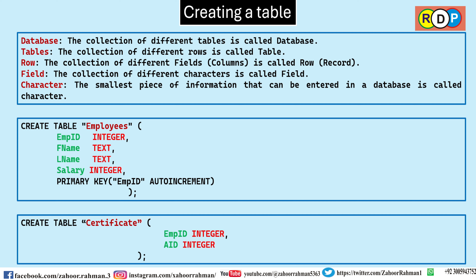The second terminology is table. What is a table? The collection of different rows — row is the new terminology, record was the old one — so when we are entering different rows inside a table, it is called a table. Now what is a row? The collection of different fields — field was the old terminology, the new terminology is column. So the collection of different columns is called a row.